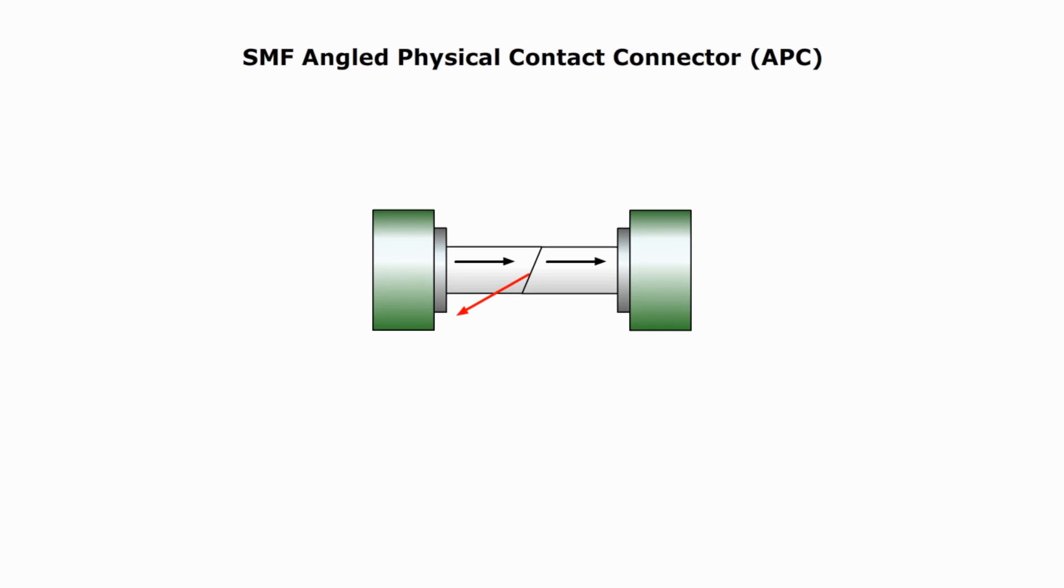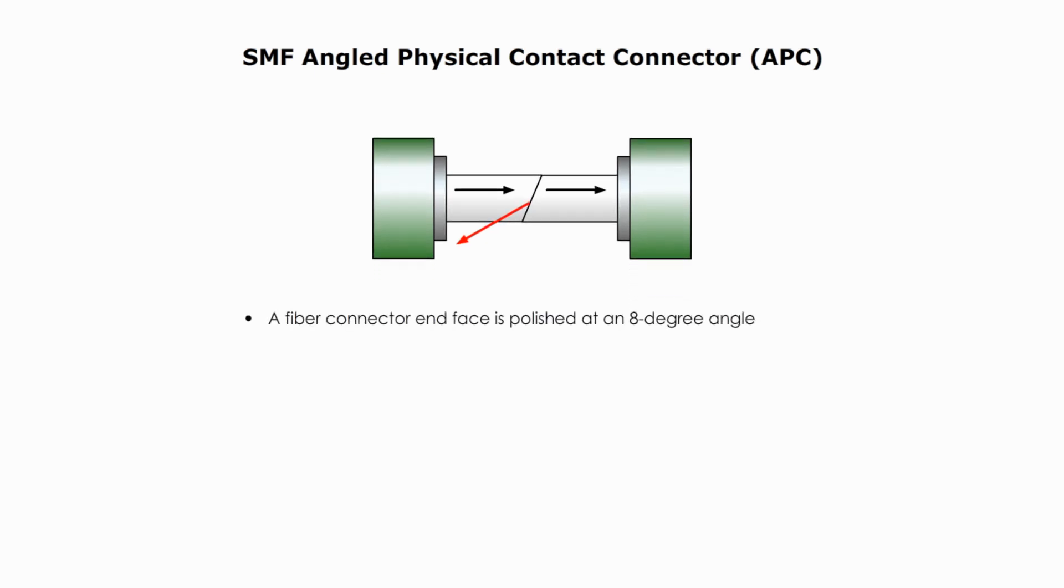APC polish is when a fiber connector interface is polished at an 8-degree angle. The polish style allows even tighter or smaller interface connections, thus achieving better performance than UPC. Actually is the best compared with the other three. APC connector color is gray.